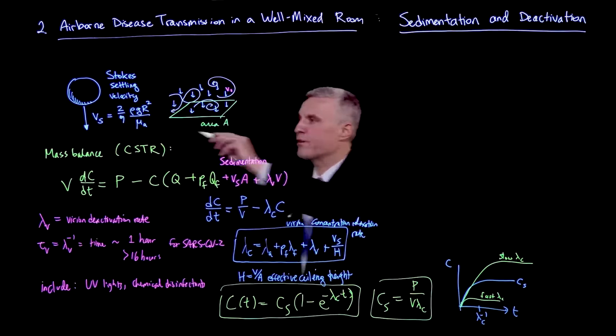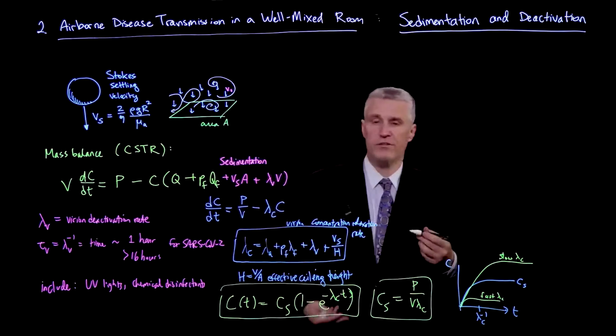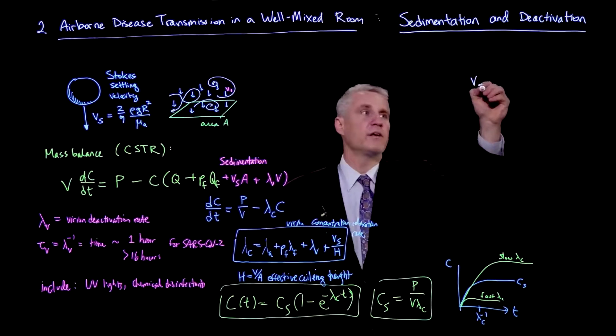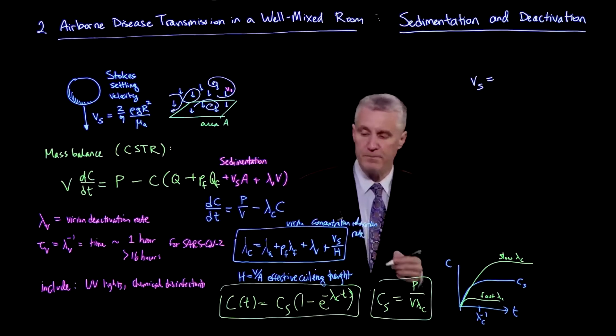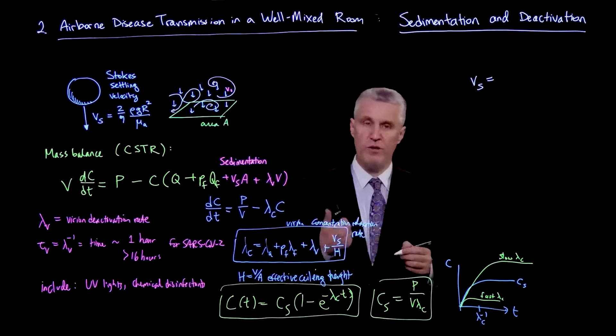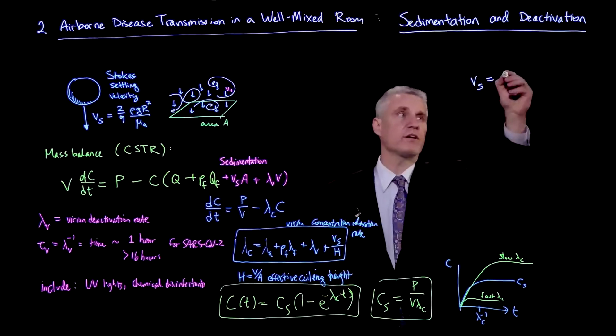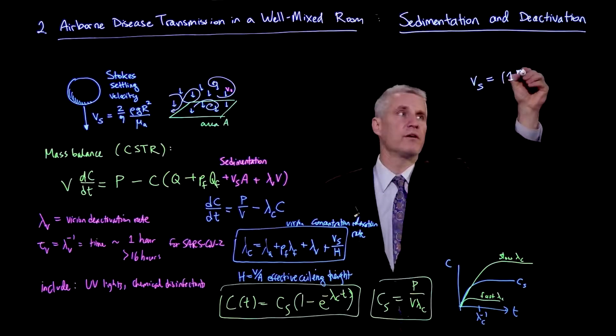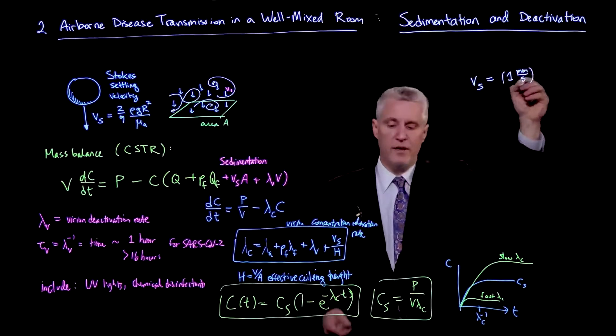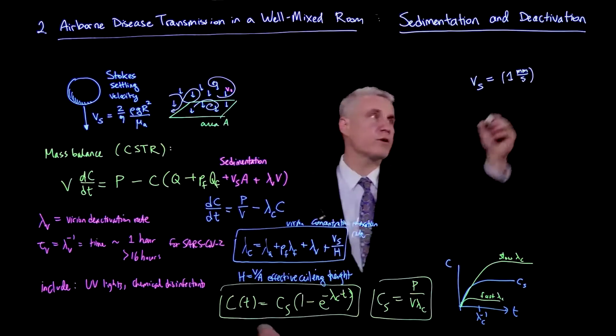But why don't we still just think a little bit more about the calculation that we've done here with regard to the sedimenting droplets. So let me plug some numbers here into this. I've already done this earlier. And I'll just remind you that the sedimentation velocity is 1 millimeter a second for a 3 micron radius.